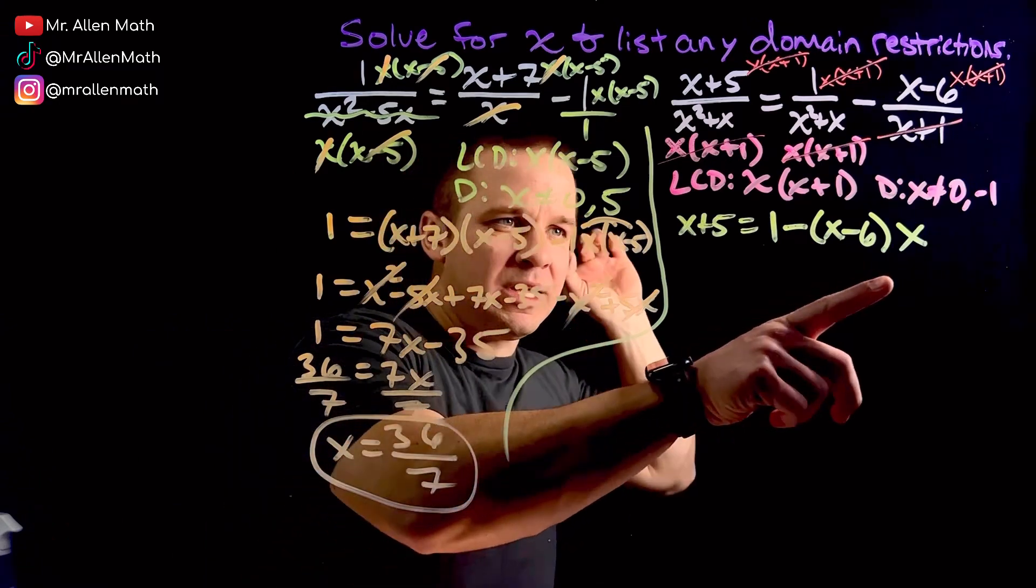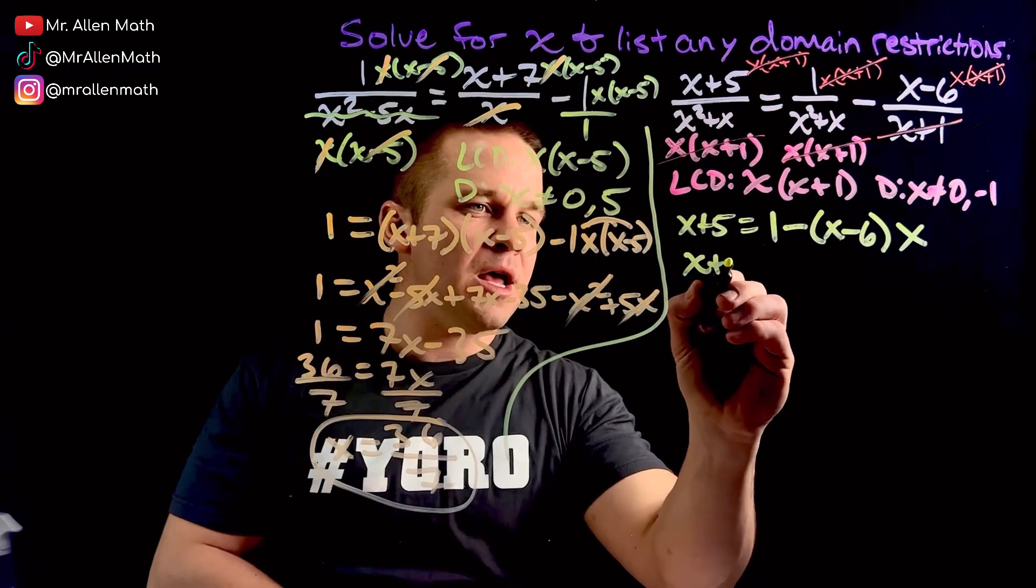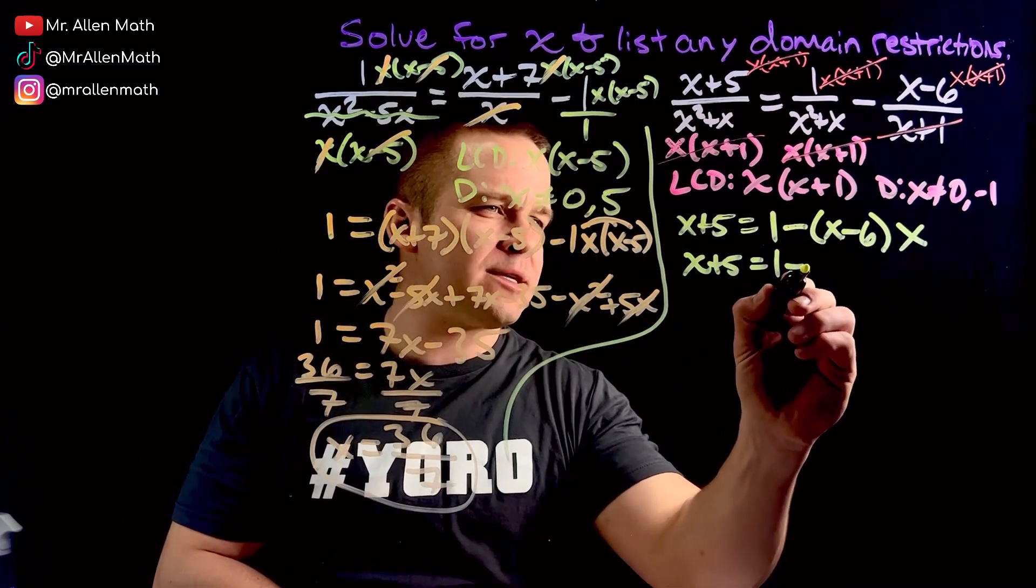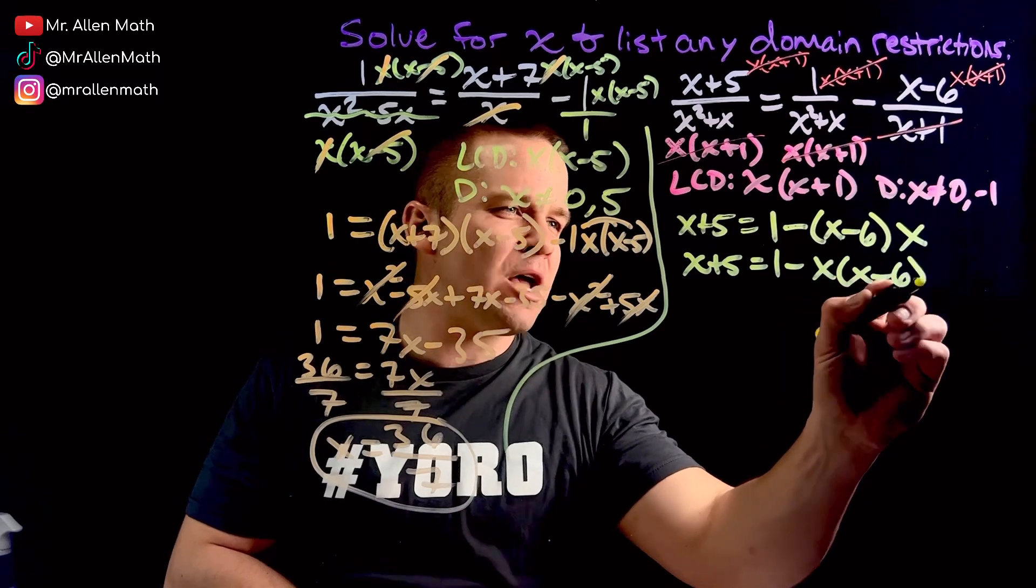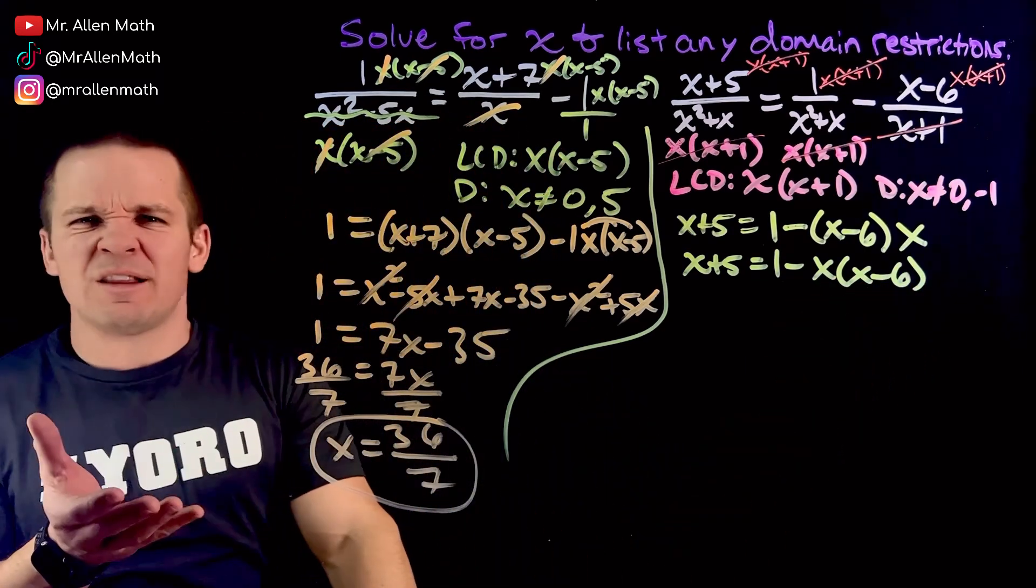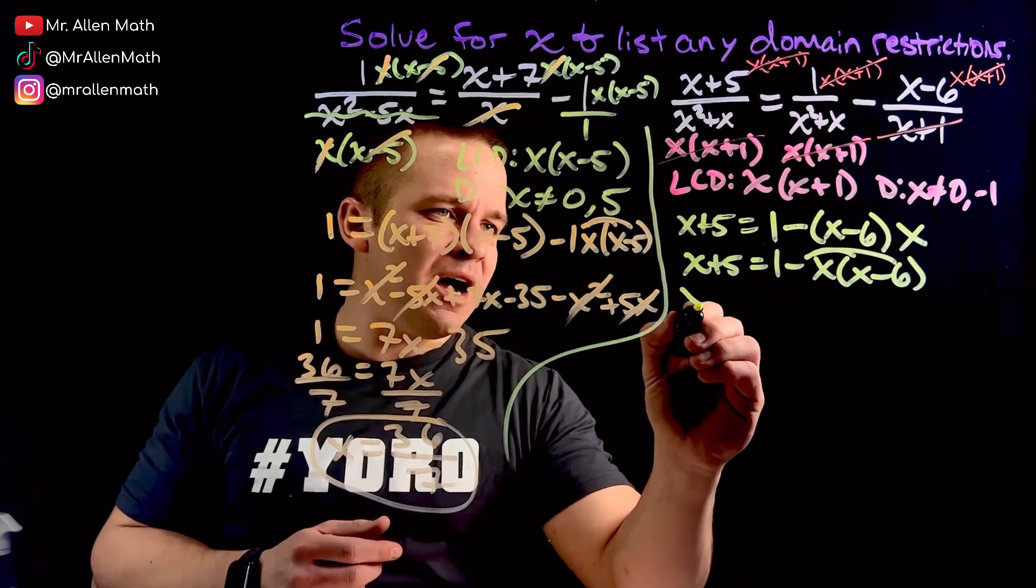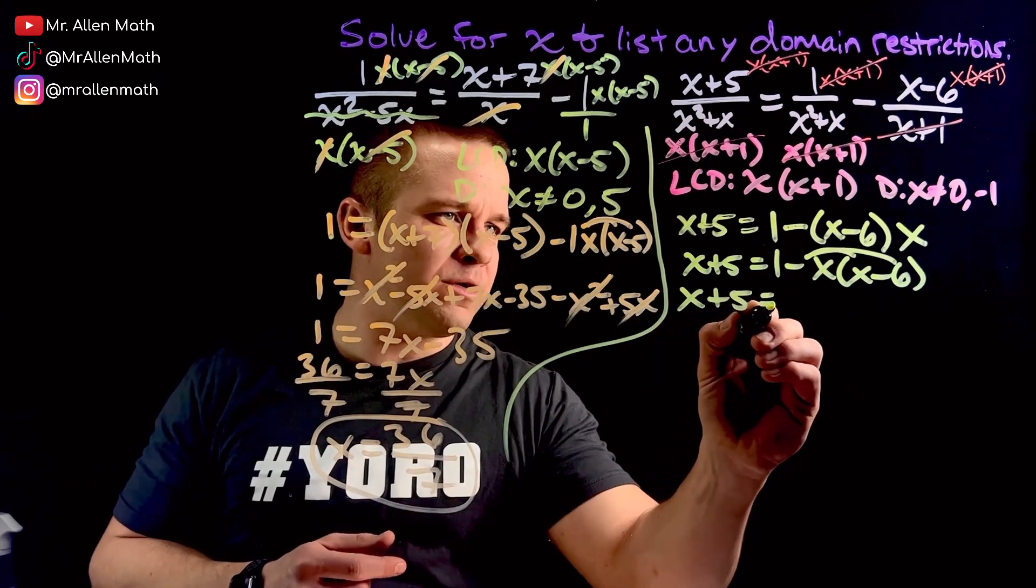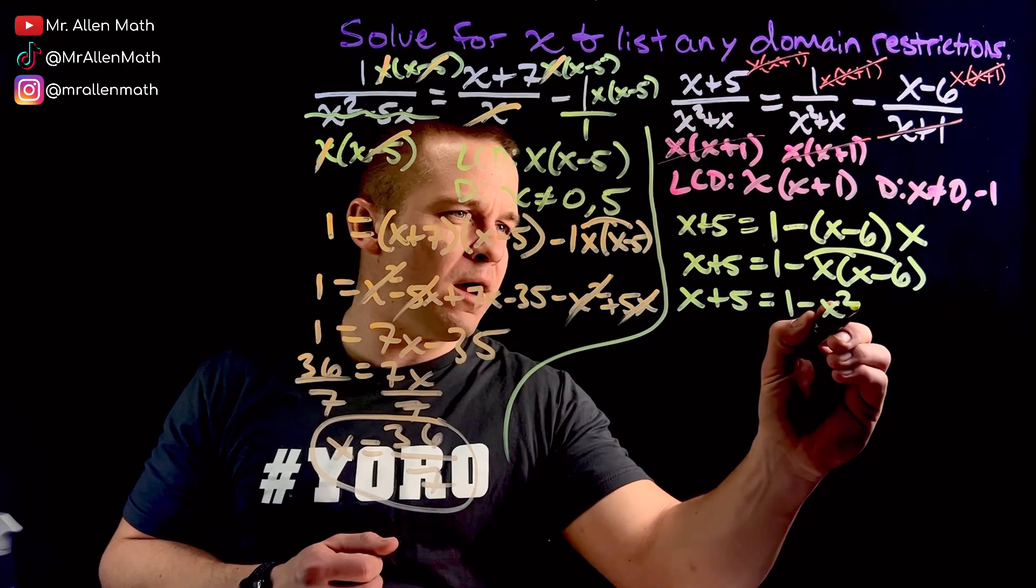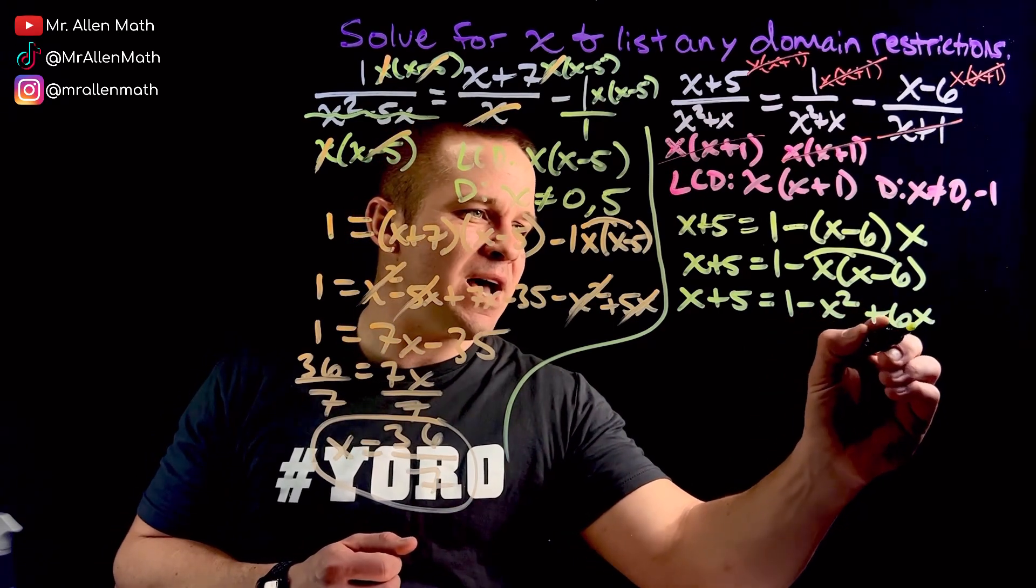You know what? I'm going to rewrite this guy over here with the x first. I think that would be a little bit more normal, I guess. Minus x times x minus 6. Might help with the distribution. You seeing the distribution there. So I'm going to distribute that negative x in. I've got x plus 5 equals 1 minus x squared plus 6x.